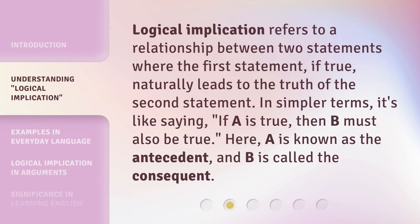Logical implication refers to a relationship between two statements where the first statement, if true, naturally leads to the truth of the second statement. In simpler terms, it's like saying, if A is true, then B must also be true. Here, A is known as the antecedent, and B is called the consequent.